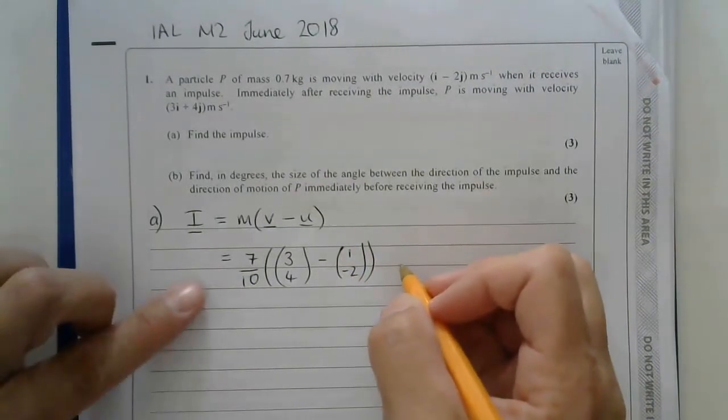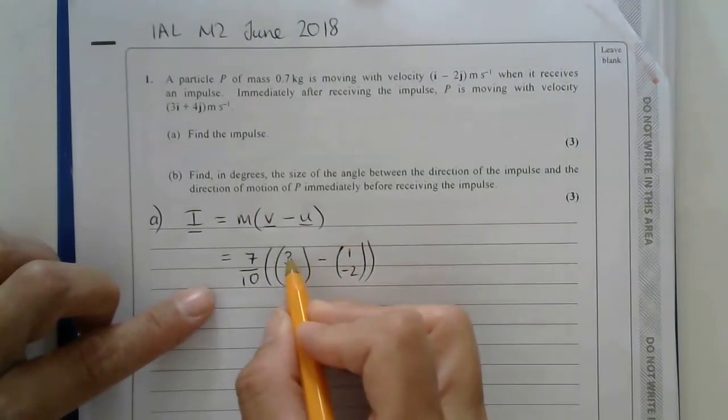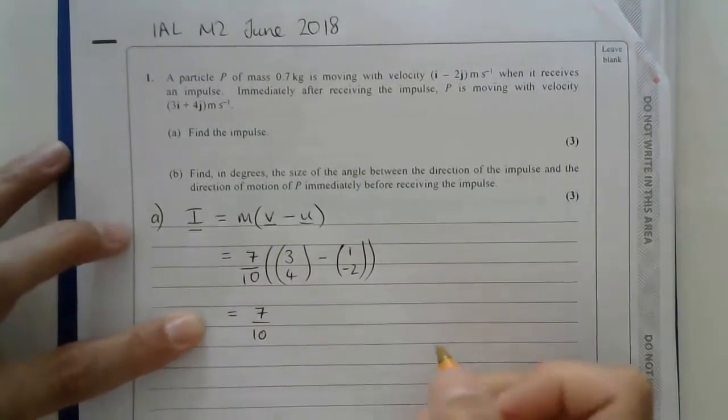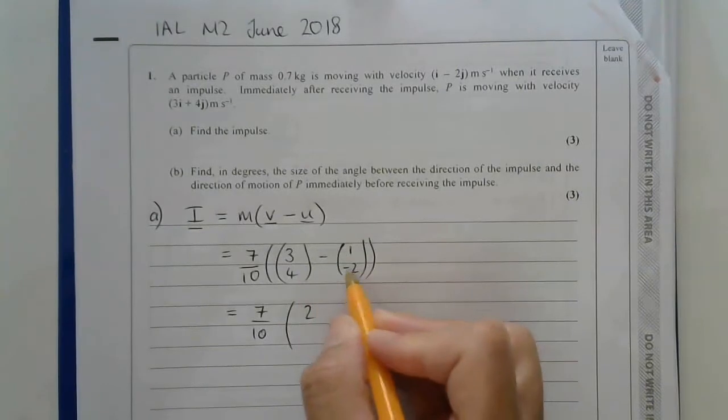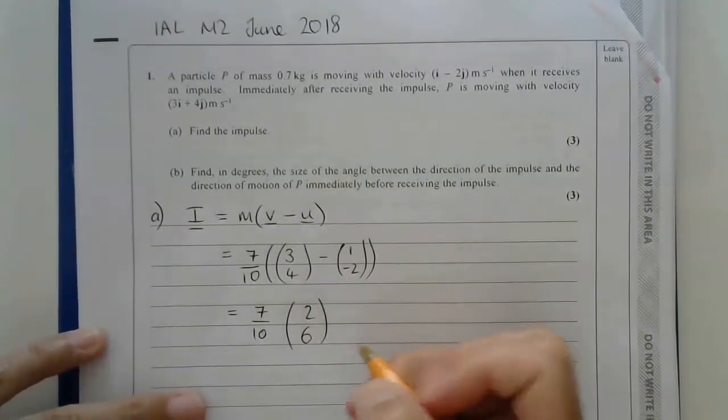And so now I end up with 7 tenths of 3 minus 1, which is 2, and 4 subtract negative 2, so in other words 4 plus 2, which is 6.